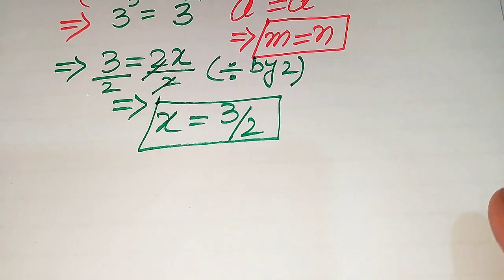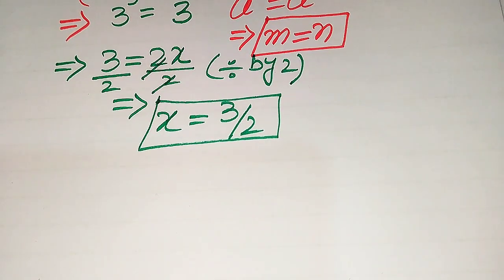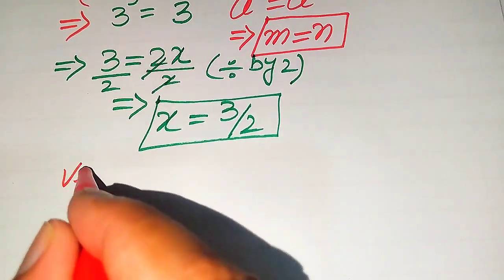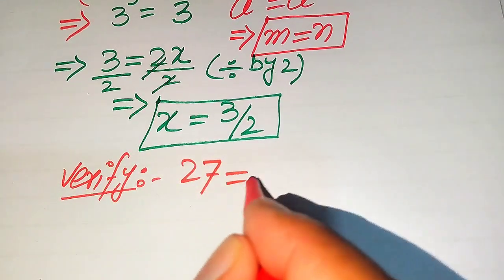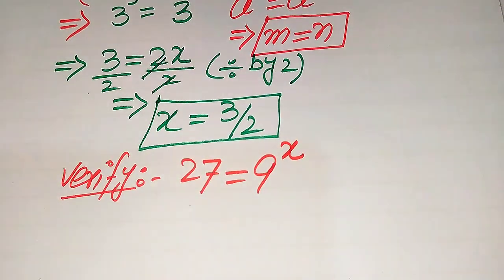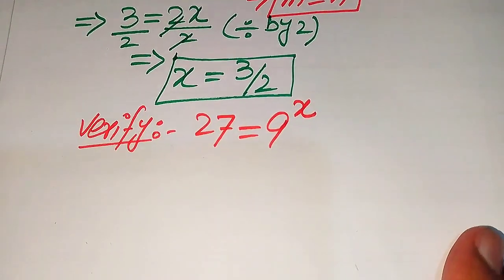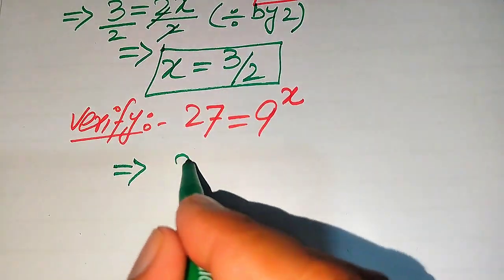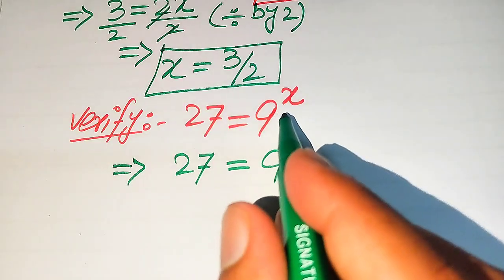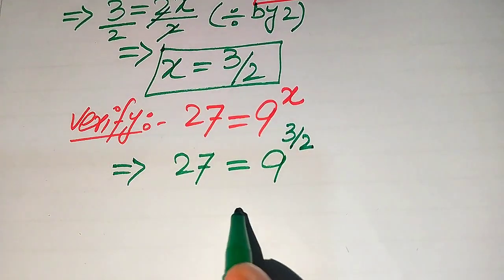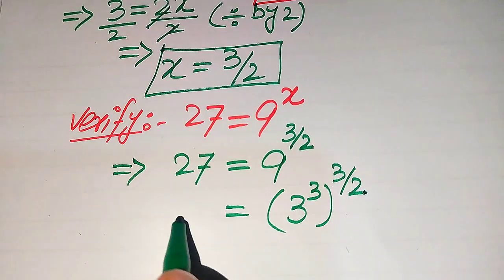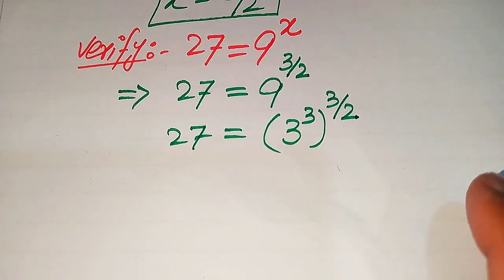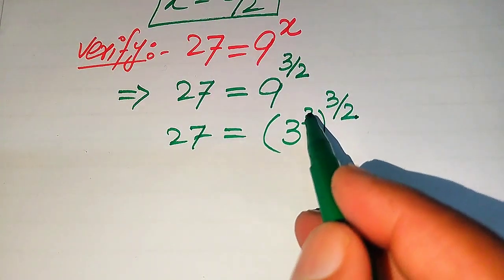We get just one root of the given equation. Now we need to verify this root. We copy down the given equation: 27 equals 9 to the power of x. We substitute x equals 3 over 2 into the right hand side and check whether both sides are equal. So we have 9 to the power of 3 over 2, and we write 9 as 3 squared with whole power 3 over 2.